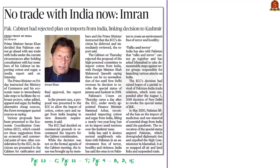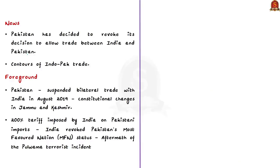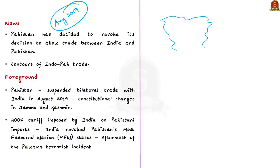This news article states that Pakistan's Prime Minister Imran Khan has said there will be no trade with India. Earlier, Pakistan had decided to allow trade between the two countries but later revoked that decision. In August 2019, Pakistan decided to suspend bilateral trade with India, citing the fallout of constitutional changes made in Jammu and Kashmir, which was bifurcated into two Union Territories — Jammu and Kashmir, and Ladakh.